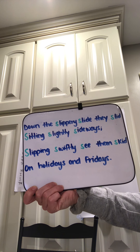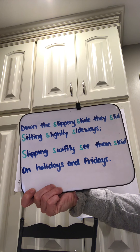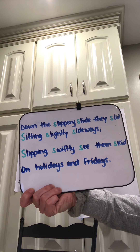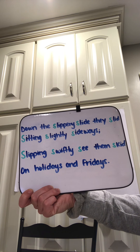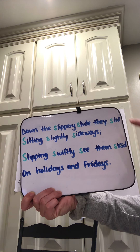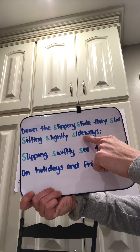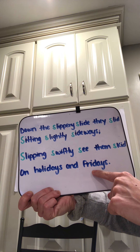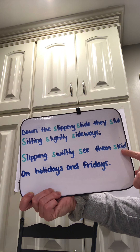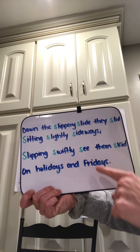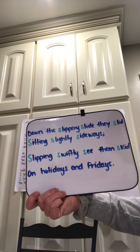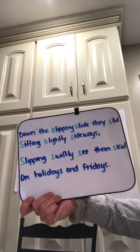If you notice also, there's a rhyming pattern here. In our last lesson we talked about A-A-B-B and A-A-B-A. In this poem we have an A-B-A-B pattern. Since there are only four lines: slid in line one rhymes with skid in line three, and sideways in line two rhymes with Fridays in line four. So the author of this poem incorporated a rhyming pattern as well as alliteration.